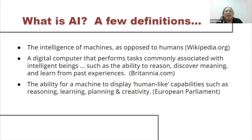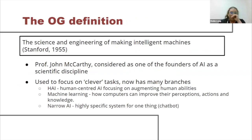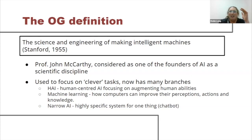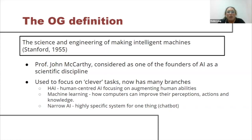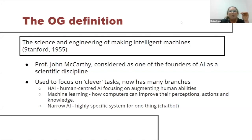Today what AI has come to mean is a lot of different things. It's really going after this notion of clever tasks, with different aspects. There's the idea of human-centered AI focusing on how to augment human performance and capabilities. There's narrow AI, which is very specific to one thing — we've all interacted with chatbots, and that's a type of AI. So there are now different branches, but the core idea is that machines are augmenting human performance.